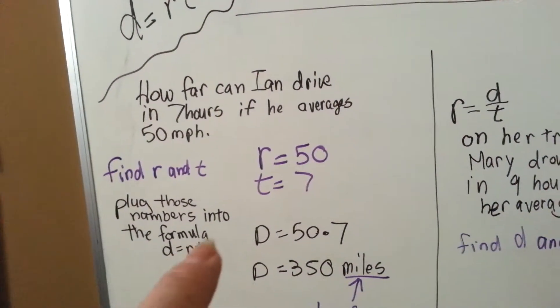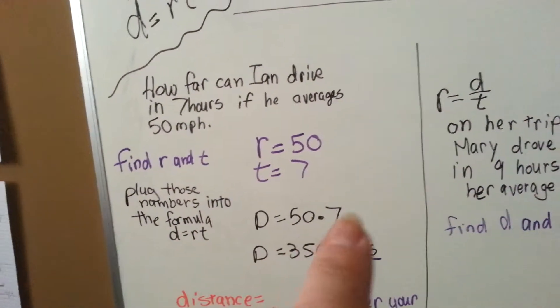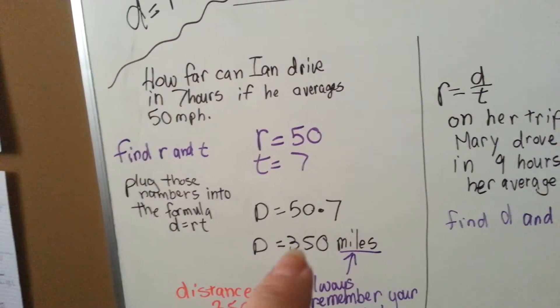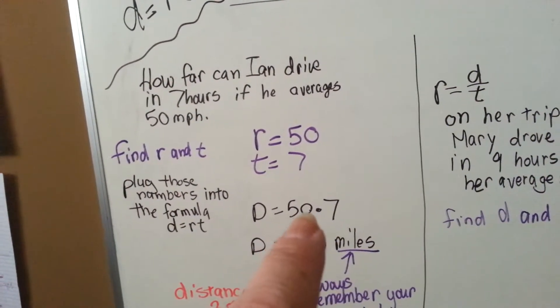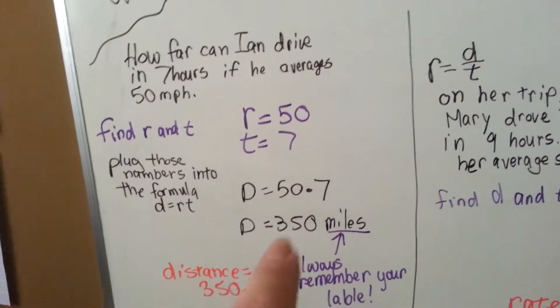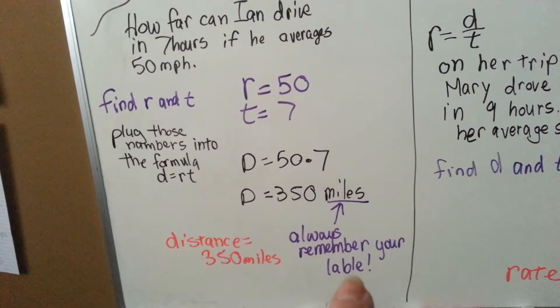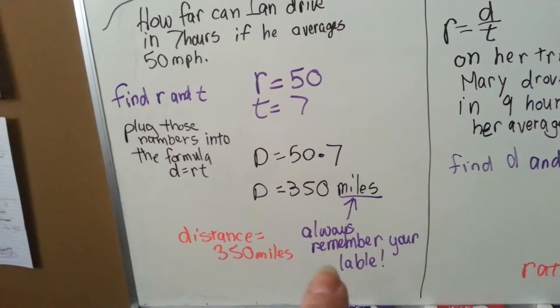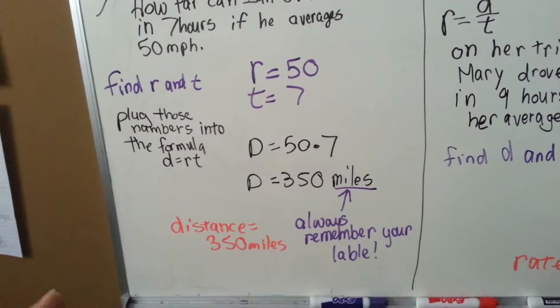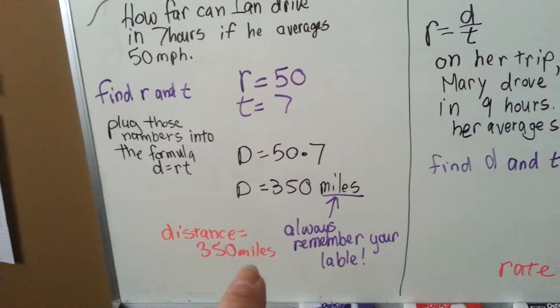Because we have to multiply these two, 50 times seven, we'll do it. Seven times five is 35 and you add the zero if you want to do mental math. And that gives us 350 miles. Always remember to label your word problems. You could get it marked wrong if you don't. So distance equals 350 miles.